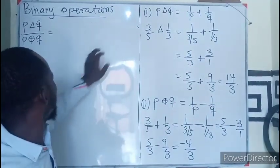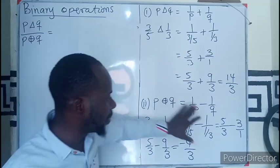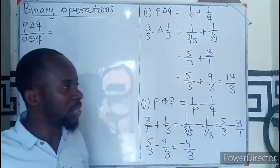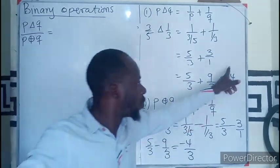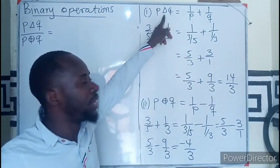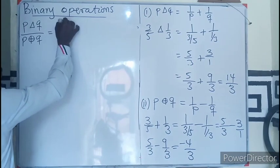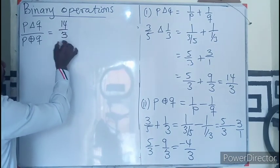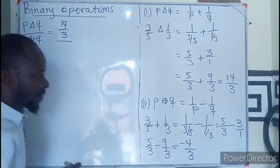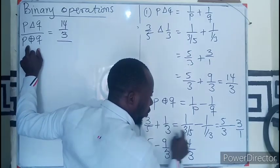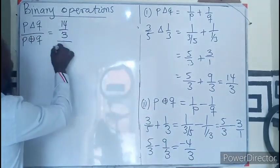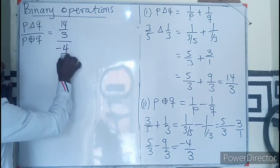But it will have been a repetition of what we have done, so I will just go straight forward. P triangle Q means in this case 14 over 3, divided by the value of P circle Q, which will give me negative 4 over 3.